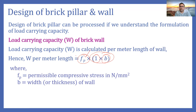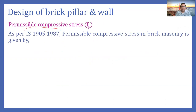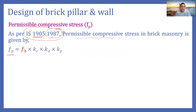The value of fp is calculated using IS code IS 1905:1987, which is the code used for design of brick masonry. 1987 is the year it was last revised. As per this IS code, permissible compressive stress in brick masonry is calculated using four parameters: fb, ks, ka, and kp. We need to understand how to calculate each of these parameters and their significance.